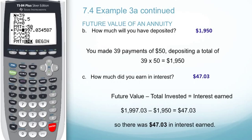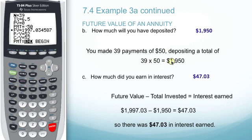To determine how much we will have deposited, we want to take the number of payments, which is 39, times our payment amount of $50. 39 times 50 gives us a deposit total of $1,950.